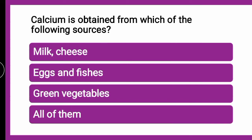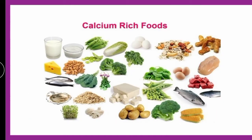Next question: Calcium is obtained from which of the following sources? Whether it is obtained from milk, cheese, eggs and fishes, green vegetables, or all of them? You can put your answer in the comment box. If you look at the calcium-rich foods, you can see eggs, milk, cheese, nuts, and green vegetables.